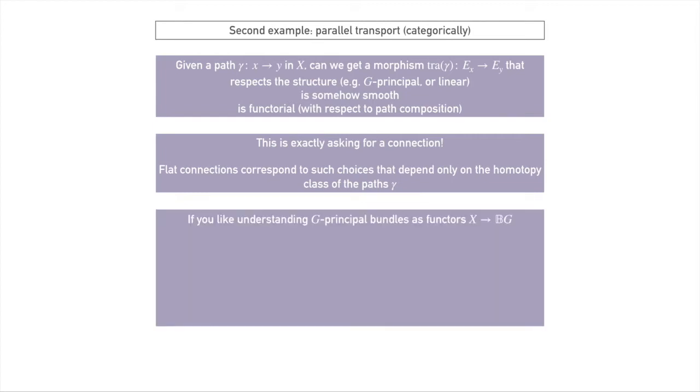But let's talk a little bit more about a specific example. If we study G-principal bundles, we can think of them as functors from X into BG. It then turns out that G-principal bundles with some parallel transport functor correspond to functors from P₁(X) into BG.